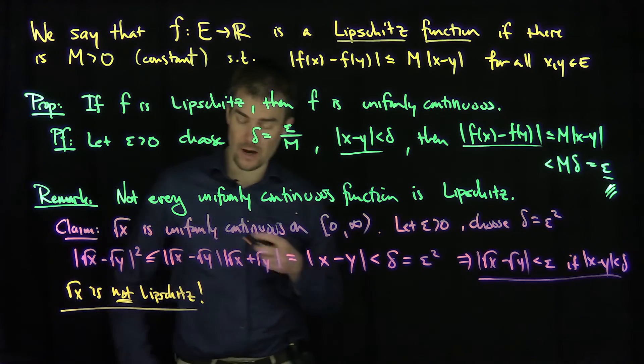However, this is not a Lipschitz function. How can we say it's not Lipschitz? If we had √x is not Lipschitz on the interval [0, infinity), how can we see that?